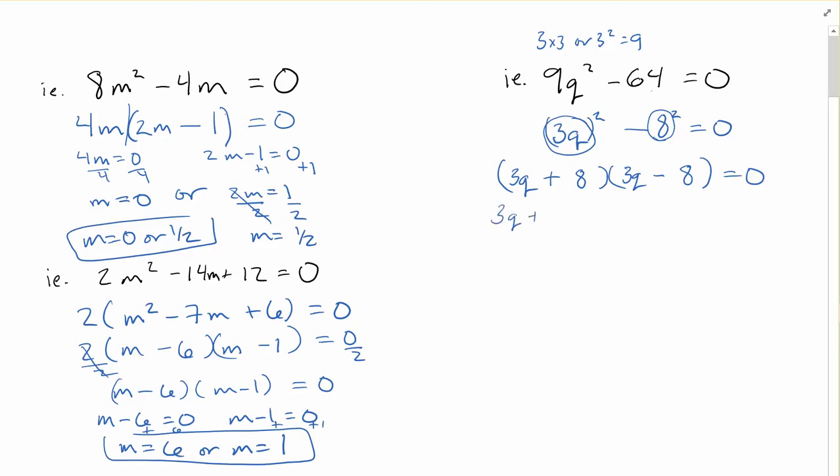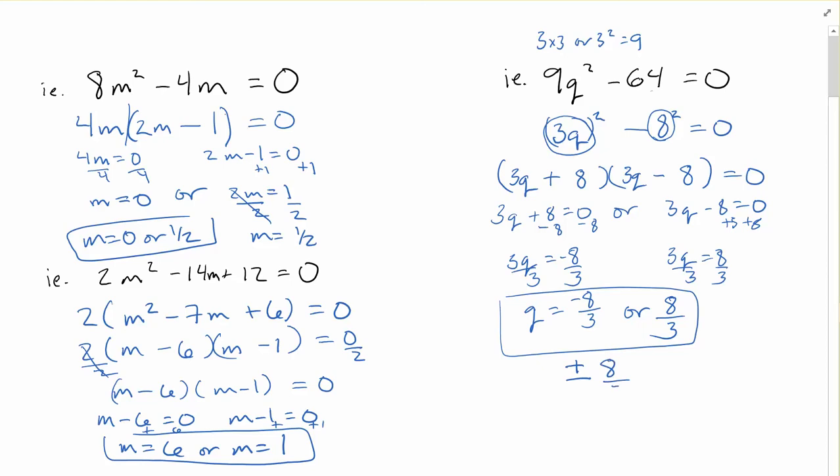Now that I've got this, 3q plus 8 is equal to 0, or 3q minus 8 is equal to 0. That's going to be minus 8, 3q is equal to negative 8, divide by 3, q is equal to negative 8 over 3. And over here, plusing 8 to both sides, we'll get the exact same thing except for it's the opposite sign. So we've got 8 over 3. So q is equal to positive or negative 8 over 3. And you might actually see the answer written like that, plus or minus 8 over 3 is equal to q.